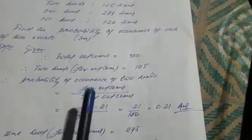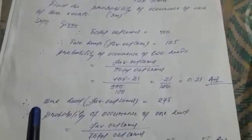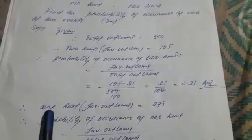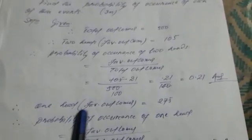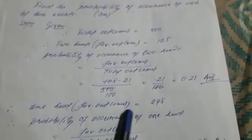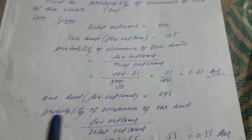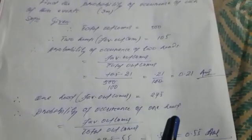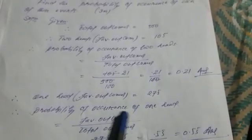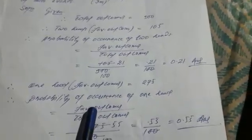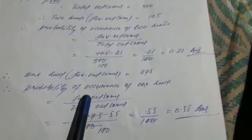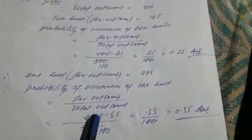Now for the next one: probability of one head. One head was obtained 275 times, so the favorable outcome in this case equals 275. Therefore, the probability of occurrence of one head equals favorable outcome divided by total outcome.